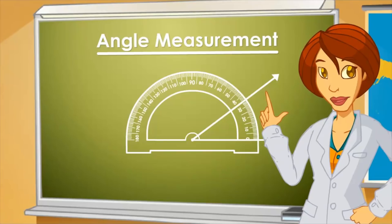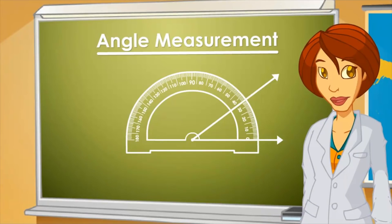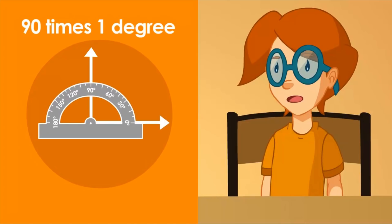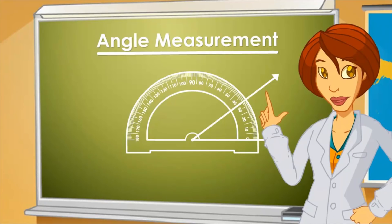When we measure something we are actually comparing that object to another one we previously called unit. So a right angle is 90 times the one degree angle. Very good, the right angle is 90 degrees if we take the degree as a measuring unit.